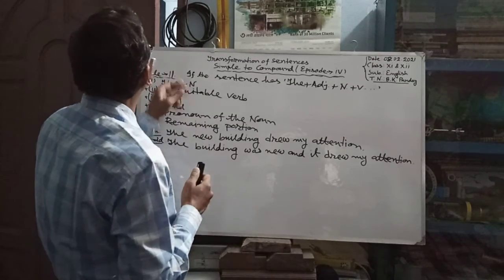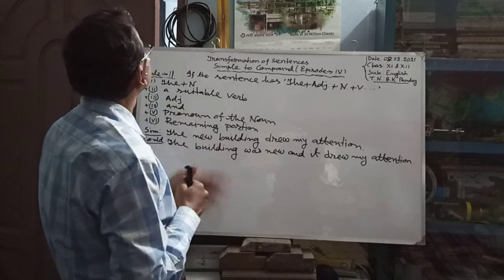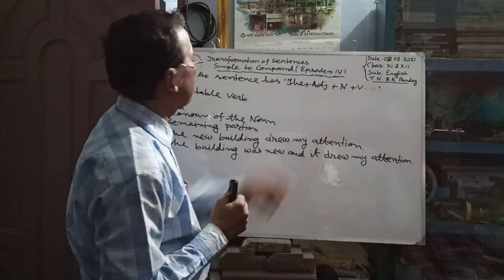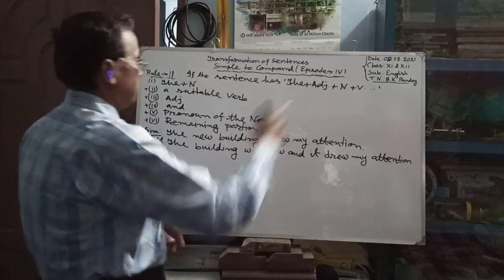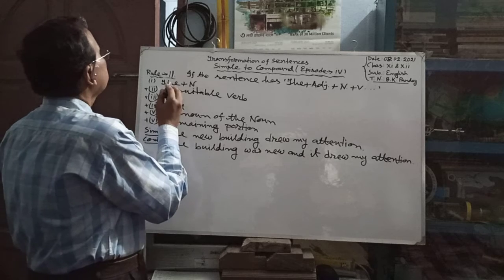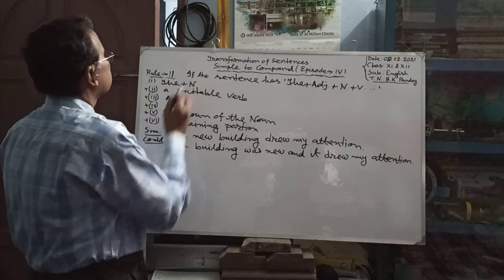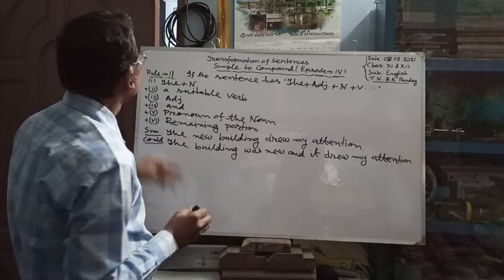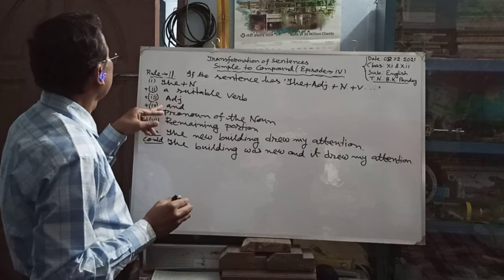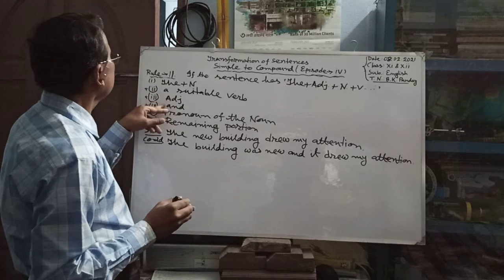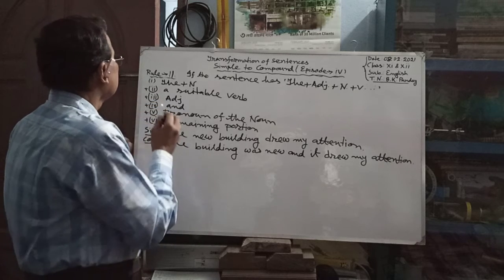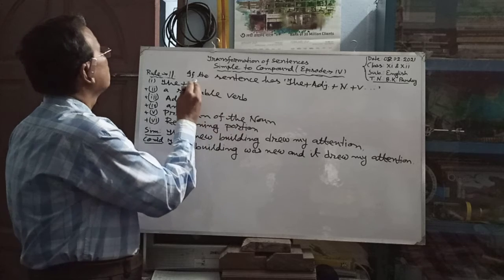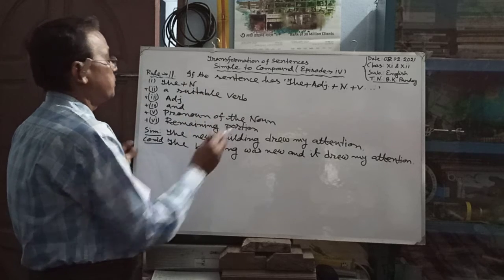Dear students, Rule Number 11: If the sentence has 'the' plus adjective plus noun plus verb and extension, then first write 'the' plus noun, then a suitable verb is brought, then the adjective, then 'and', and then we have to write the pronoun of the noun and the remaining portion.